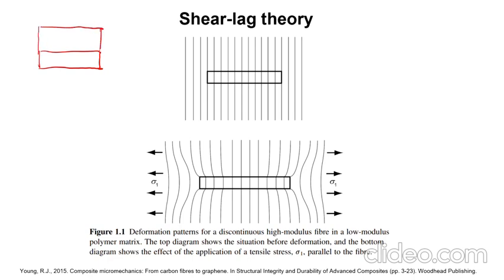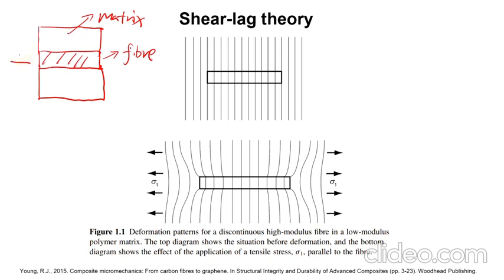It's easy to think about when you look at a simple picture. The middle one is the fiber, the outside one is the matrix. When you load it, if it is a long fiber, the fiber and matrix deform simultaneously, so the strains of them are the same. Essentially, you don't have any degradations in that case for long continuous fiber.